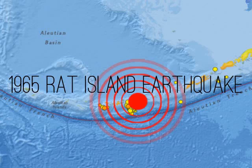The 1965 Rat Islands earthquake occurred at 5:01 UTC on 4 February. It had a magnitude of 8.7 and triggered a tsunami of over 10 meters on Shemya Island, but caused very little damage.